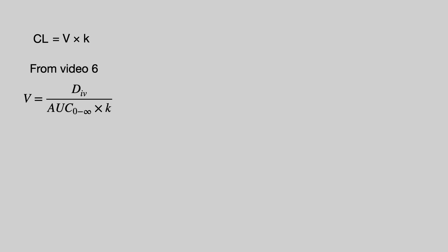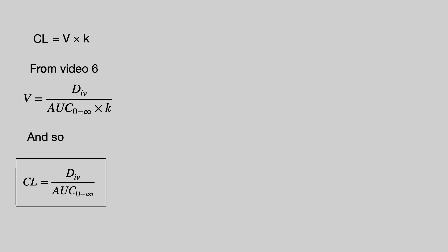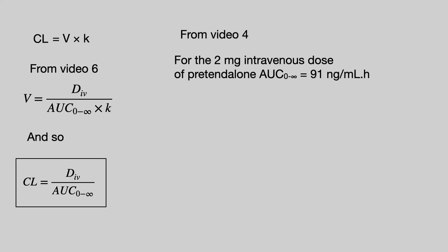Clearance equals the volume of distribution multiplied by the elimination rate constant. Taking the equation from Video 6 and doing a substitution, you can say that clearance equals the intravenous dose divided by the corresponding area under the curve. This is the standard equation for calculating total clearance in plasma. For Pretend Alone, a 2 mg intravenous dose gave an AUC of 91 nanograms per ml·hours, giving a clearance of 22 litres per hour.